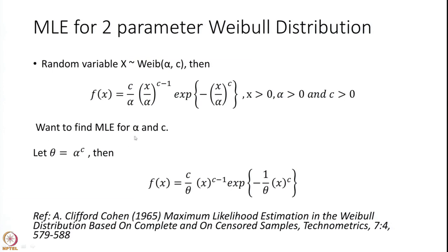We would like to find the MLE of alpha and C. It is easier to make one transformation so that the calculations become easier. If you take another parameter theta, which is a function of alpha and C — specifically alpha to the power C — then this density function very beautifully simplifies, and it is easier to work with to find the maximum likelihood estimator. Once you find it, you can always revert back and find the actual estimator of alpha and C.